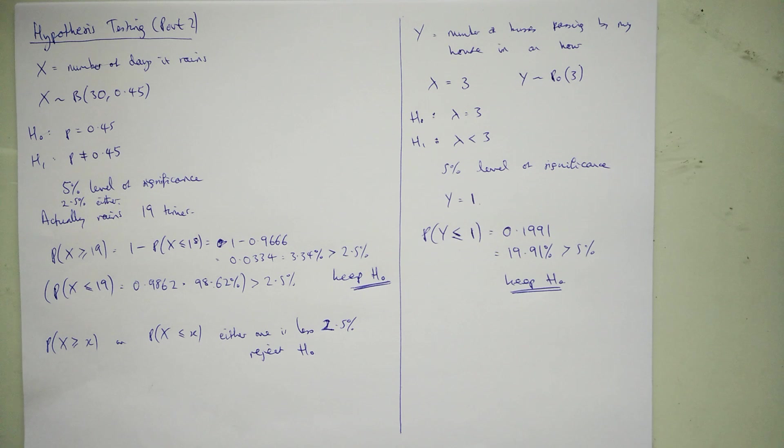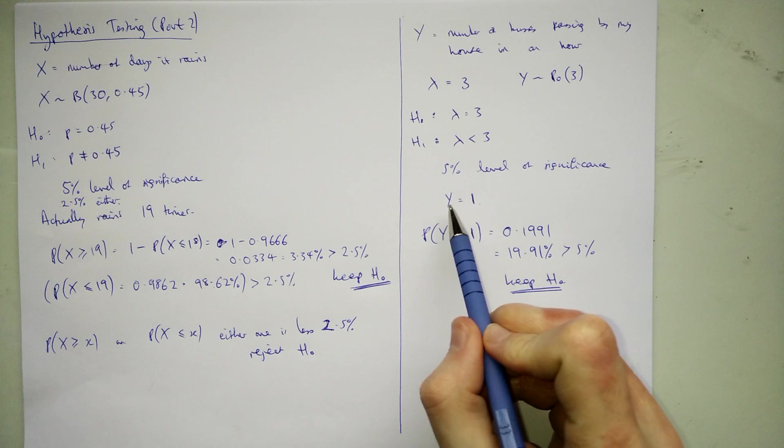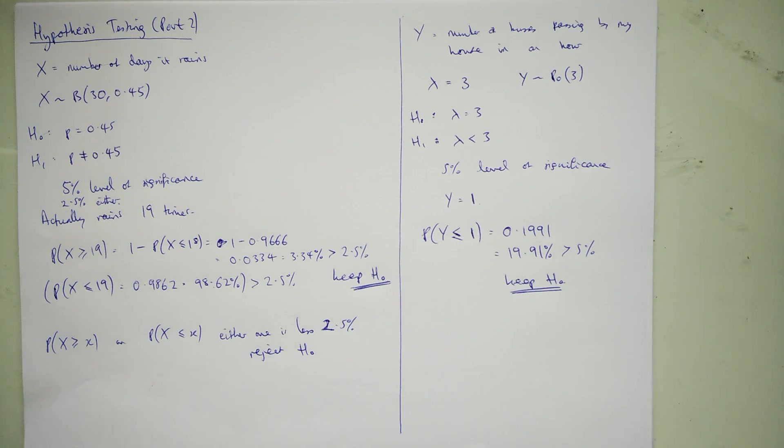There is one more video to go. In the last video, we'll look at critical regions. Because at the minute we're having to have an observation, it'd be nicer if we could know what number I would need here to be our reject answer. So we'll look at critical regions in the next video.